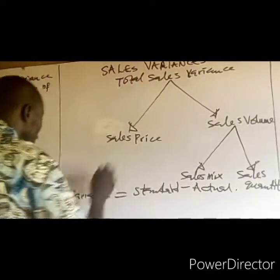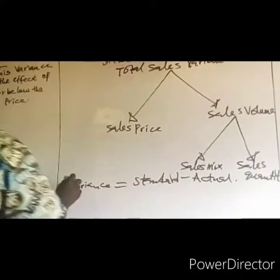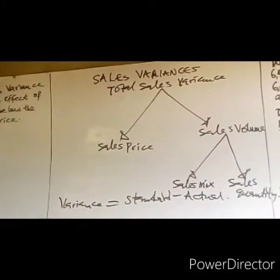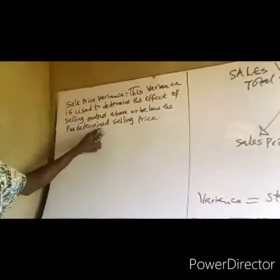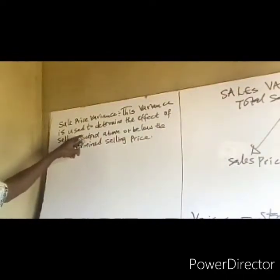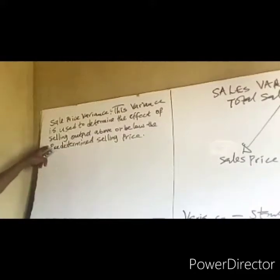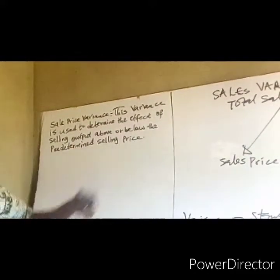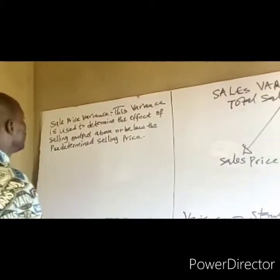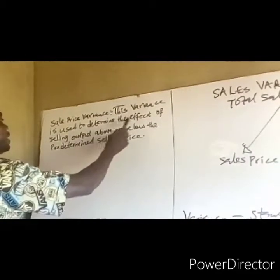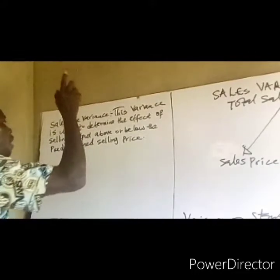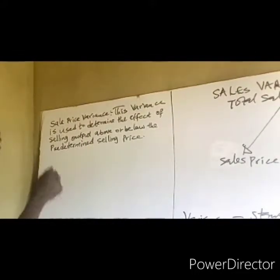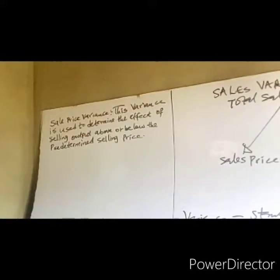Therefore, the sales margin price variance — also called the sales price variance — is used to determine the effect of selling output above or below the predetermined selling price.